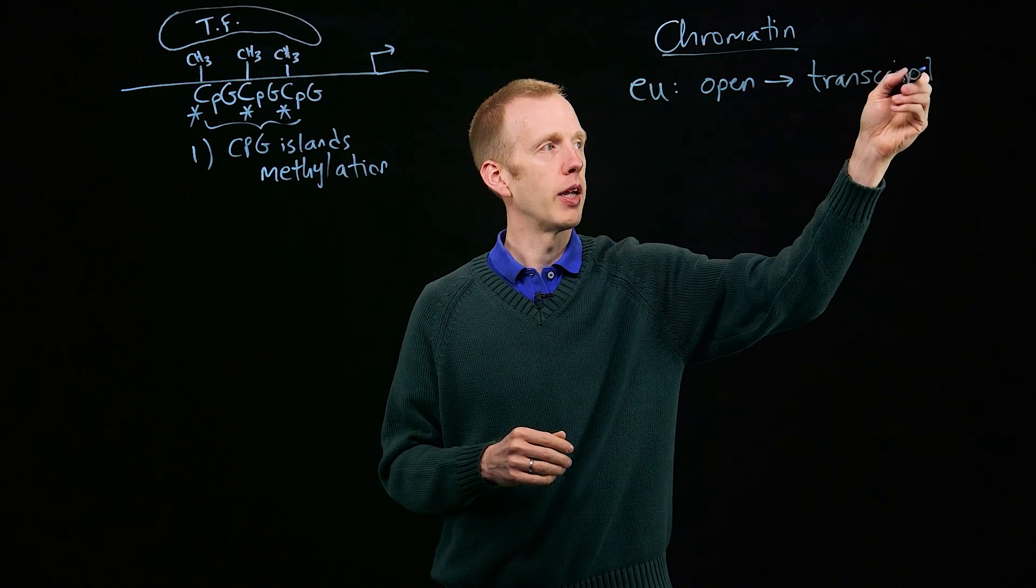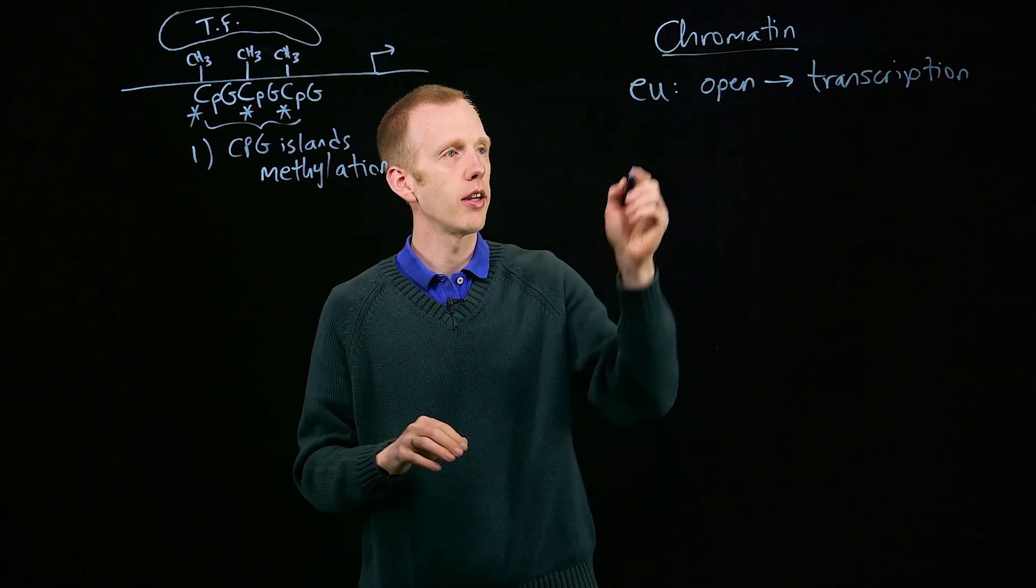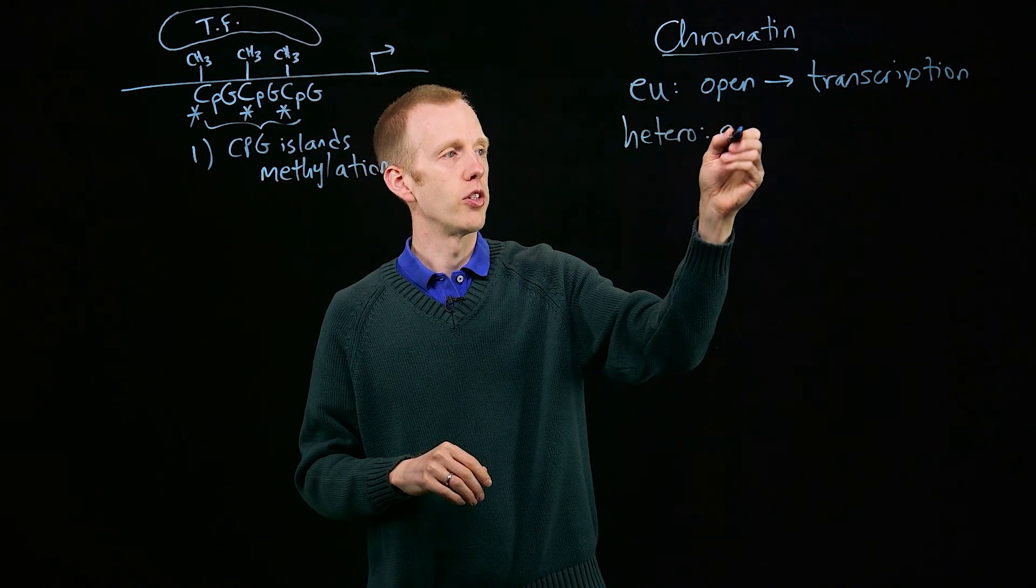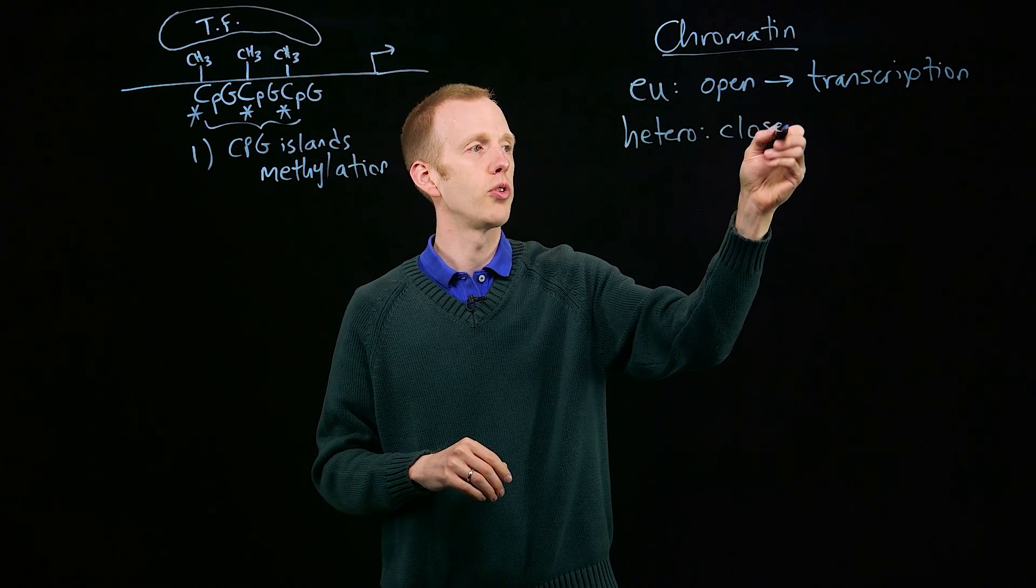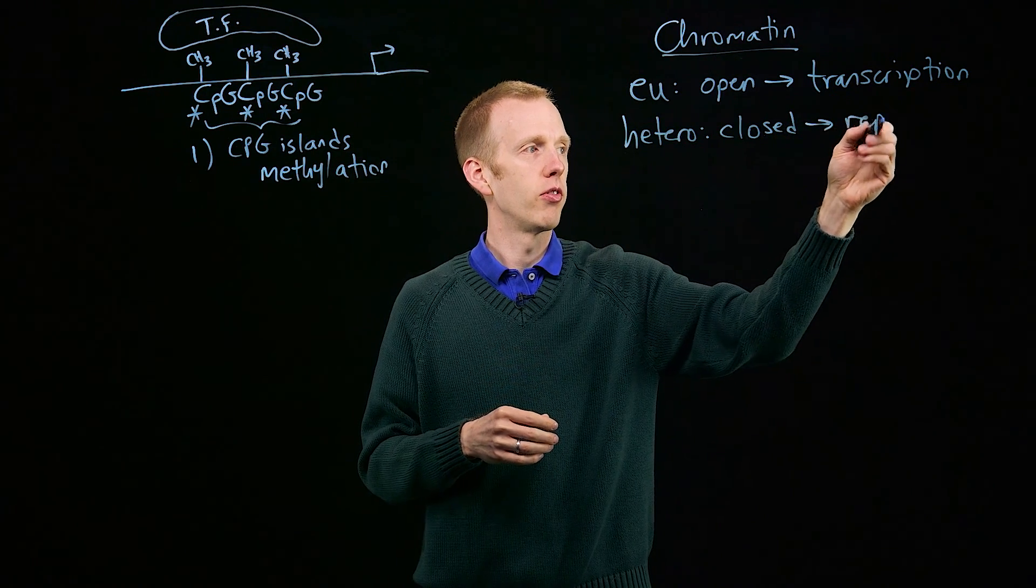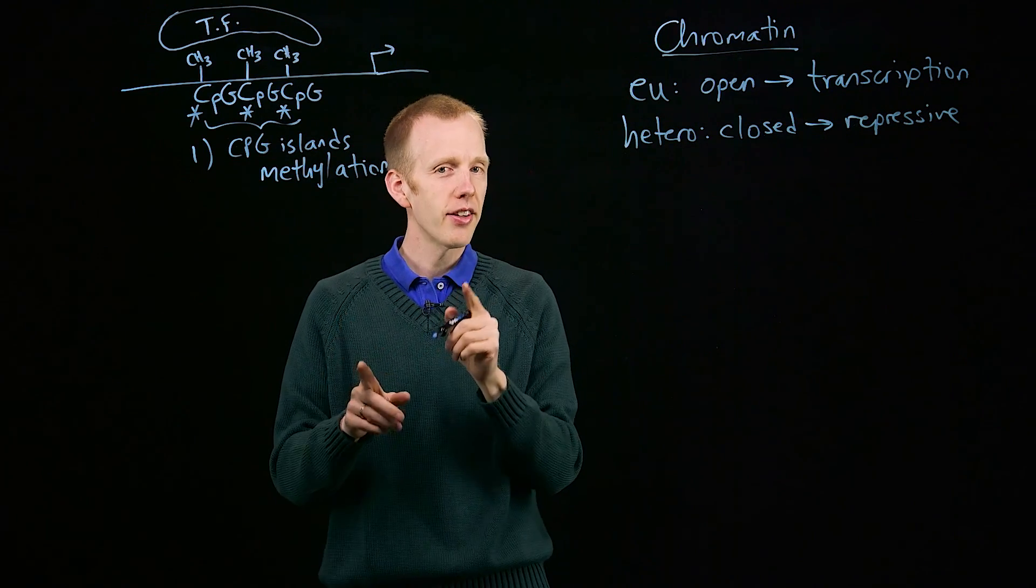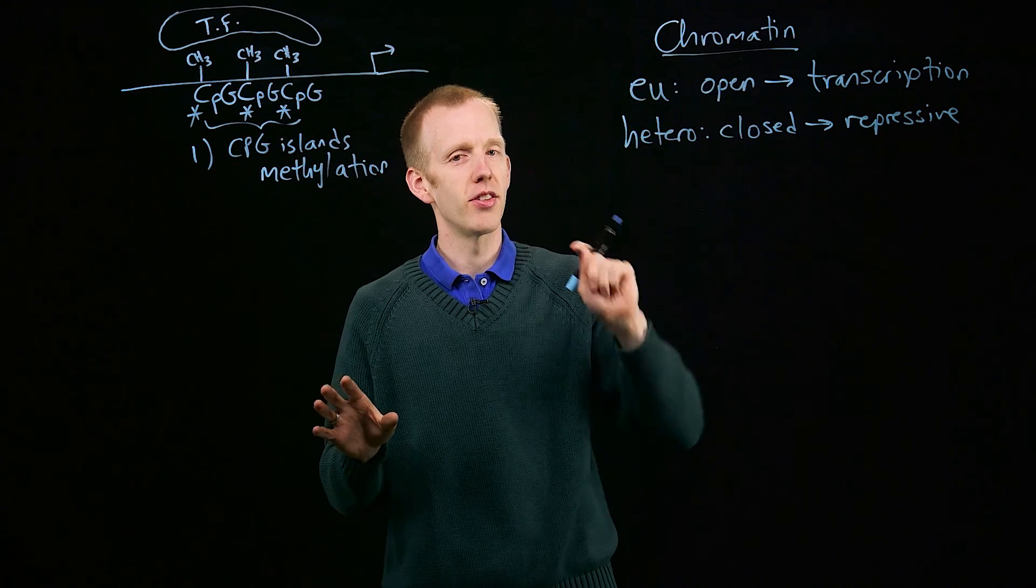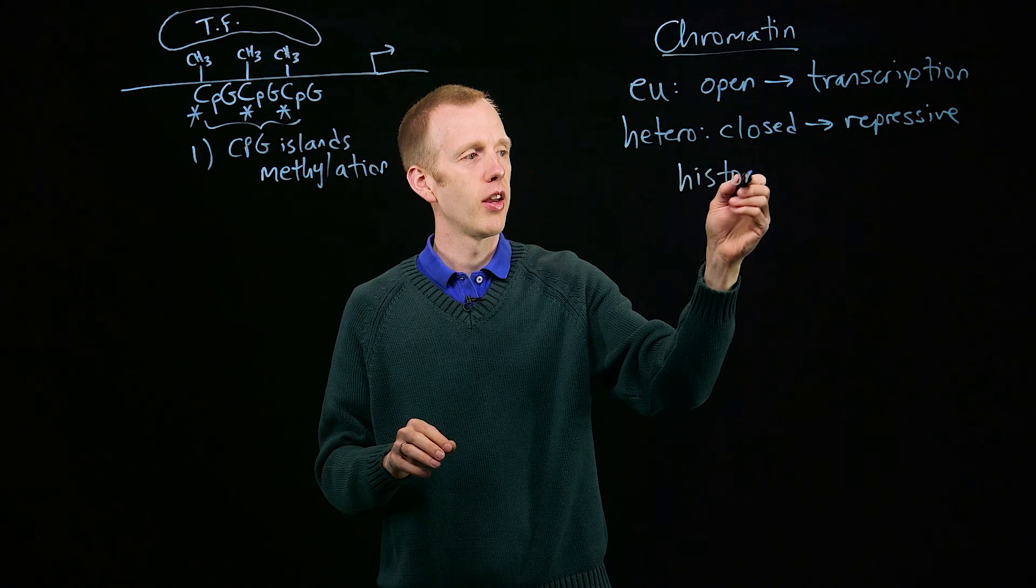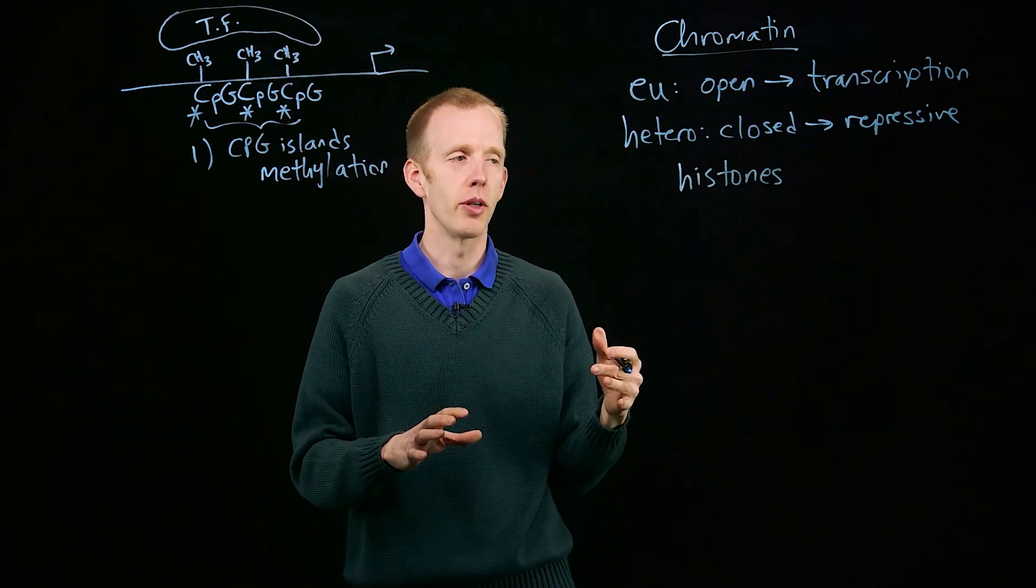Then we've got heterochromatin, which is a compact or closed DNA protein structure that is repressive to transcription. And chemical modifications, not to DNA in this sense, but to the proteins that make up the heterochromatin. The histones can cause conversion of DNA between a euchromatin and a heterochromatin state.